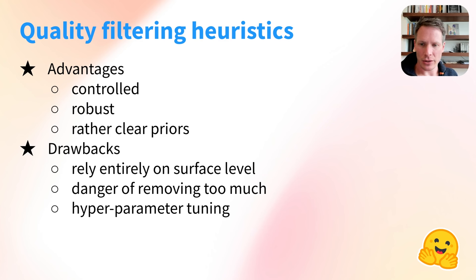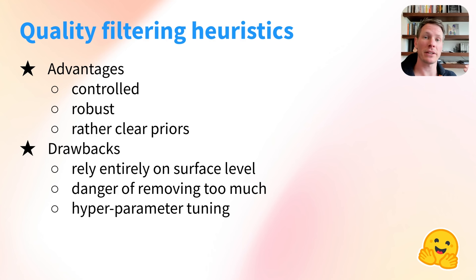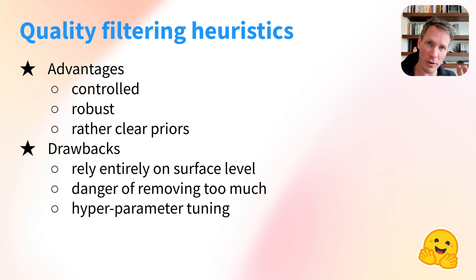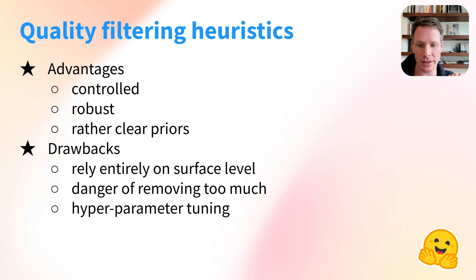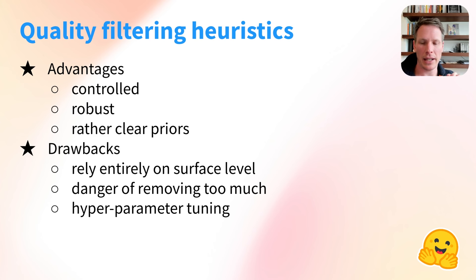The advantages of heuristics are that they're controllable and robust. The drawbacks are that you're only relying on surface-level features — you're not looking at the meaning of the document — and you may also remove too much. Sometimes you think you're just removing bad lists, but maybe these are also good lists that your users may want to input in your model. One way to be more flexible is to use stochastic removal instead of a binary choice — you sample a little bit and keep a little bit of noisy data. Another drawback is that you'll need to carefully tune your hyperparameters, which can be a time-consuming process.